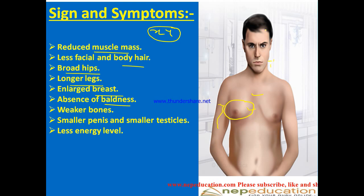There is also absence of baldness. The bones become comparatively weaker. There is a smaller penis. The testicles are small and underdeveloped, so the person is not capable of producing offspring — they are sterile. There is also a lower energy level. These are the signs and symptoms of Klinefelter Syndrome.